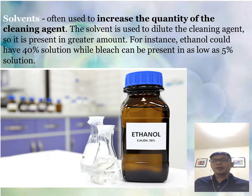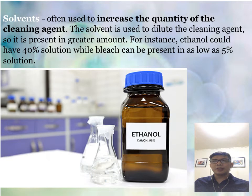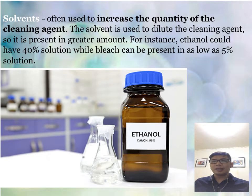Let's begin with the first ingredient — we have solvents. Generally, solvents are used to increase the quantity of the cleaning agent. It is also used to dilute the cleaning agent present in greater amount. For instance, ethanol could have a 40% solution while bleach can be present in as low as 5% solution in that cleaning product.